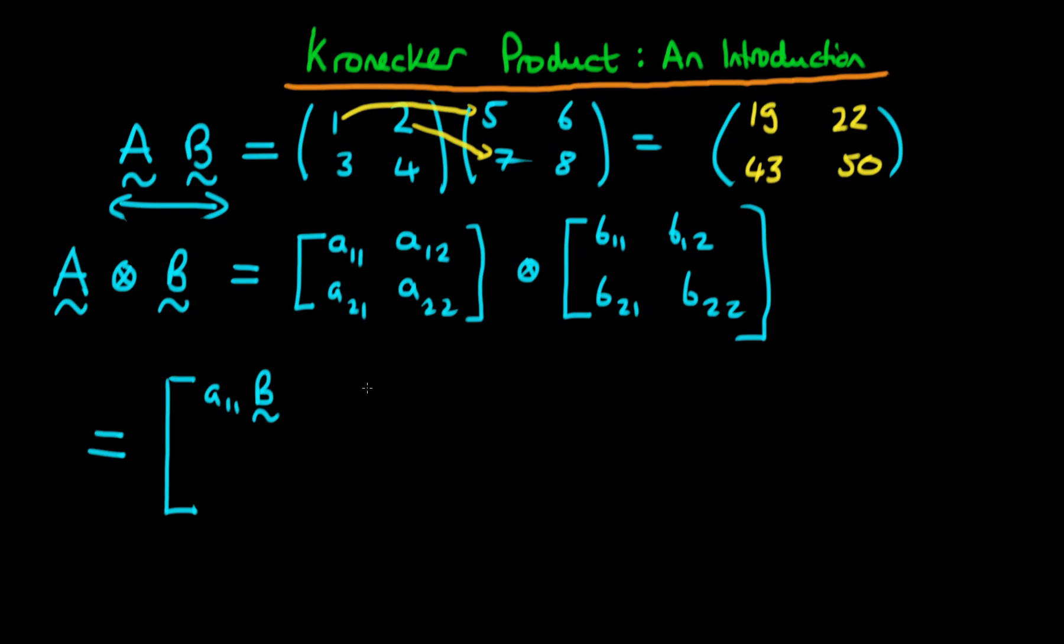The next four components on the top right are A12 times the matrix B. In the bottom left I'm going to have A21 times the matrix B, and in the bottom right we have A22 times the matrix B. So we've taken each component of A and multiplied them by the entire matrix B.